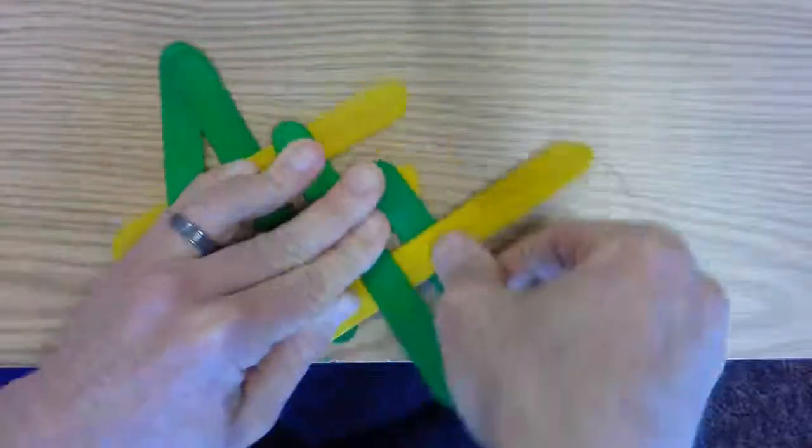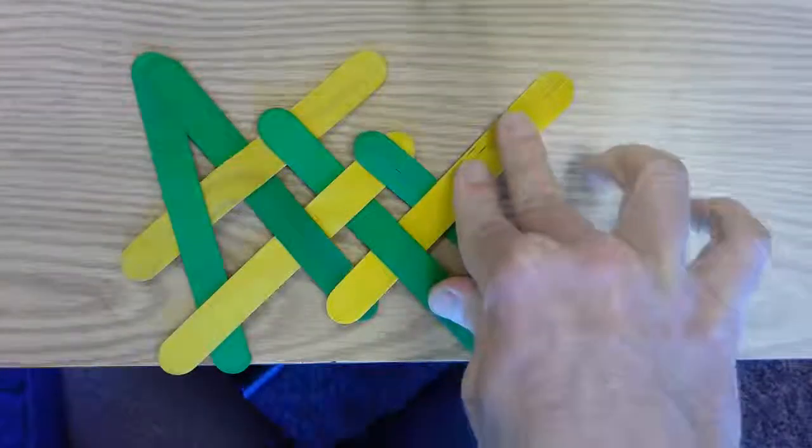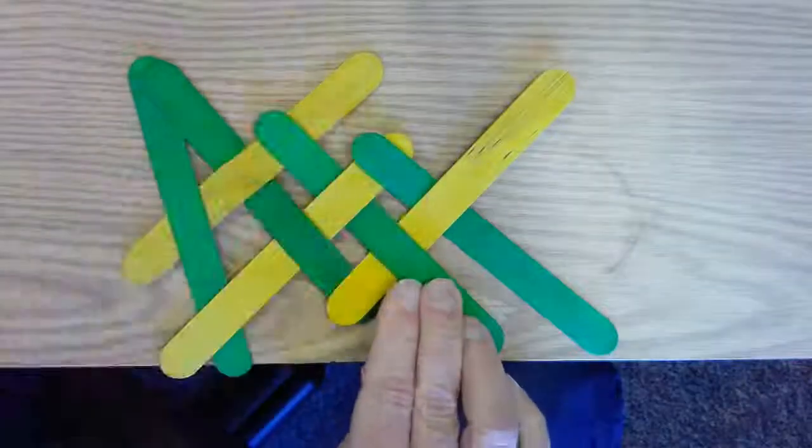Later on, as you continue this pattern, you won't have to manipulate the sticks quite so much. The more sticks you have, the less tension there is on each stick. And then the easier it is to get your shape. Sometimes that happens. It's all right. Keep it where it was. Keep tension on it. Under, over. Don't give up. There we go.